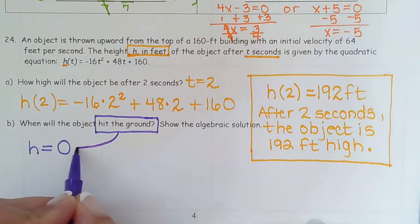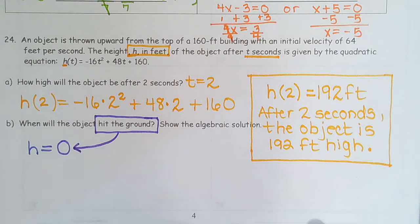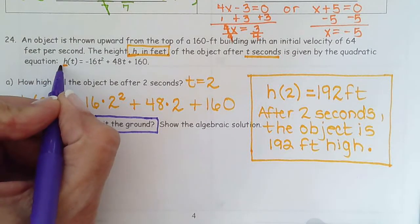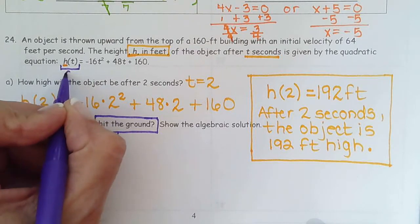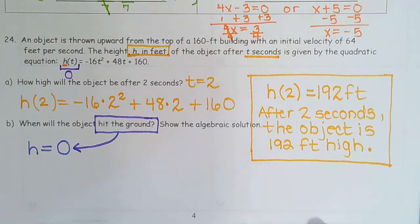So every time you see that, you have to know it means that. So they want to know when will the ball's height be zero. So what we're going to do is go up here and replace height with zero. Not T with zero. That's time. Height.